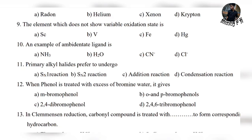The element which does not show variable oxidation state — it's a simple question. The answer is scandium, atomic number 21. This is its electronic configuration; the ground state has a completely filled d orbital with no partially filled electrons. Vanadium (23), iron (26), and mercury (80) all show variable oxidation states due to partially or completely filled d orbitals.